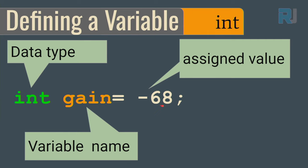To clear the serial monitor screen, just press the clear button. To print on the next line, use Serial.println() instead — 'ln' means print and add a new line at the end. The 'ln' affects where the next output starts.